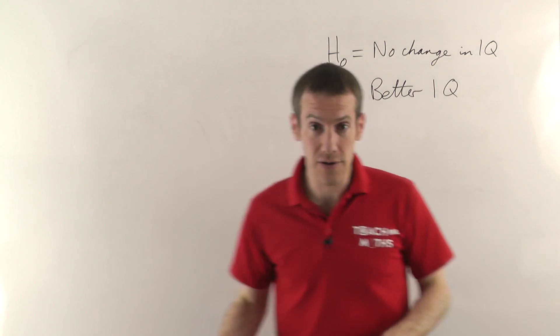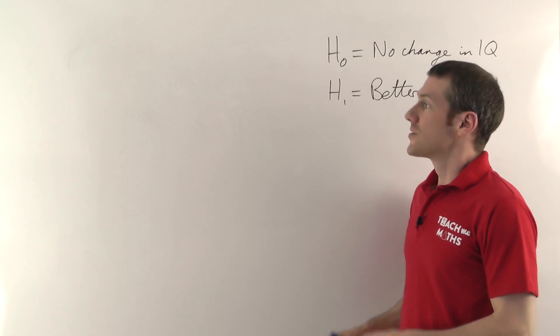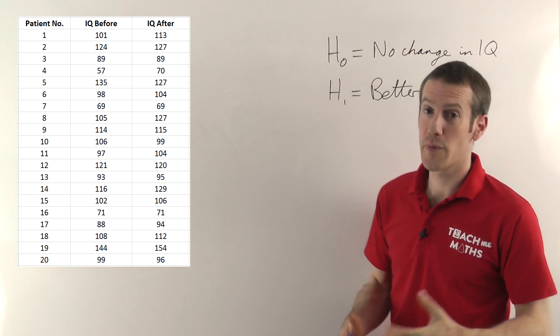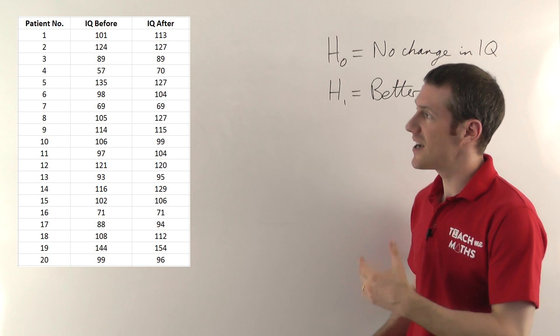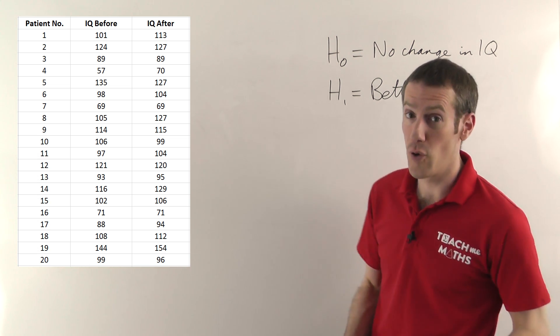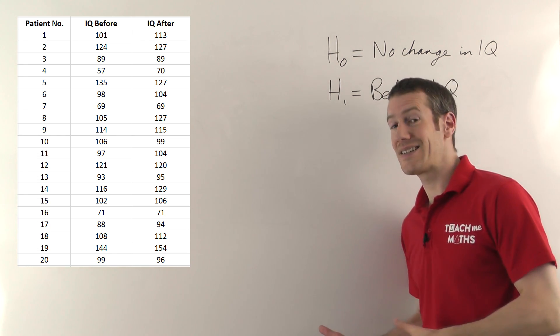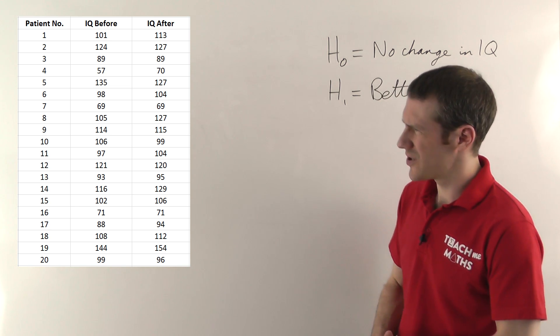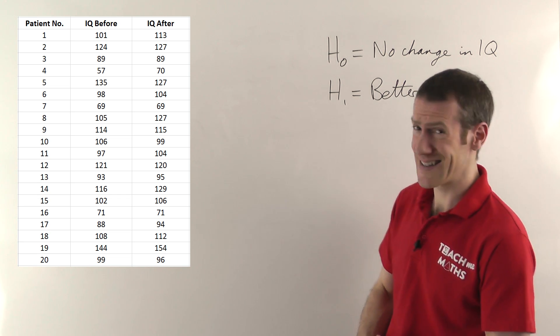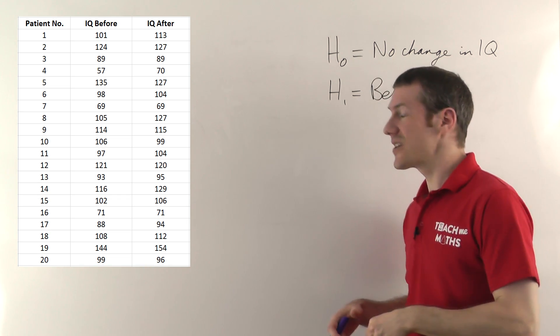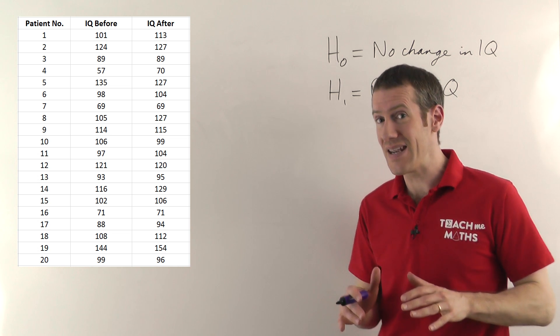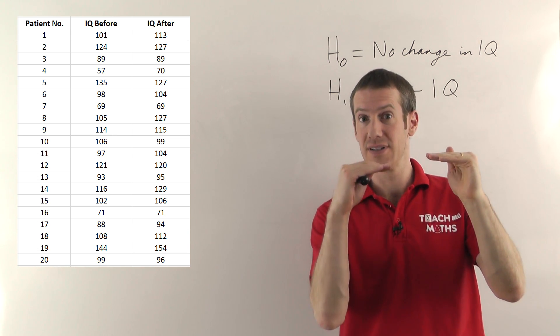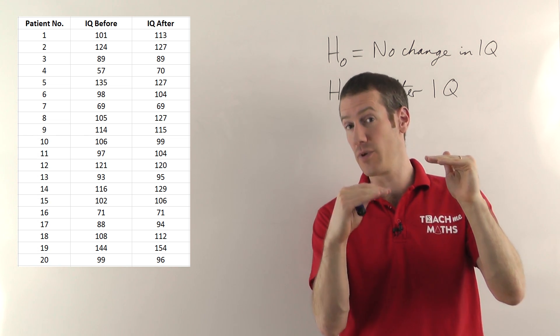Now in terms of the actual data, here's the data I've just typed it into Excel. You can see down left we've got the patient and we've got 20 different patients, and then the test result - their IQ test from before they took the drug and then their IQ test after they took the drug. And you can see that some of them have definitely improved. One or two haven't improved very much. In fact I think patient number 10 has actually got worse, but we're looking to see if there's an overall improvement.